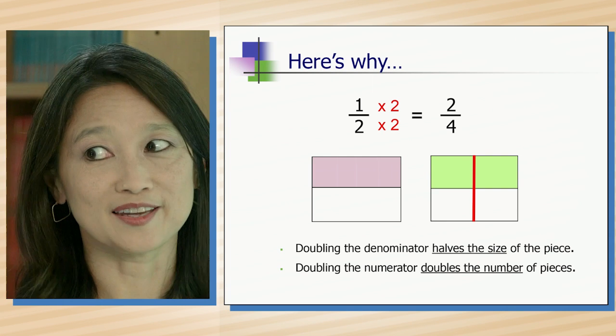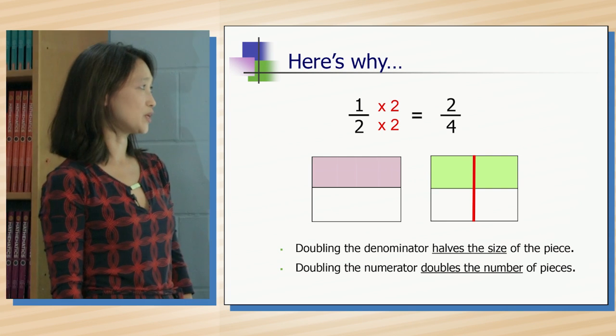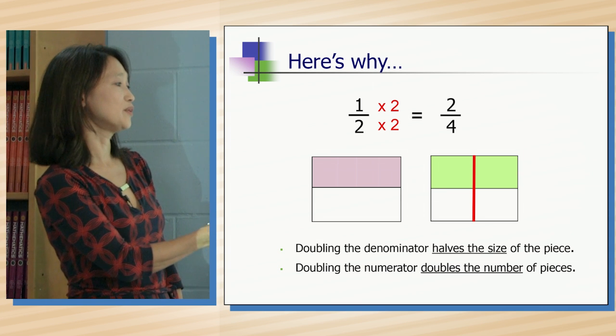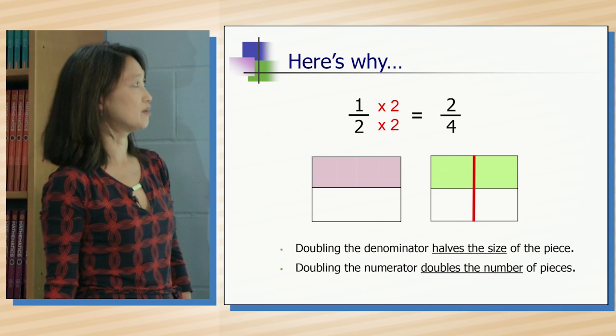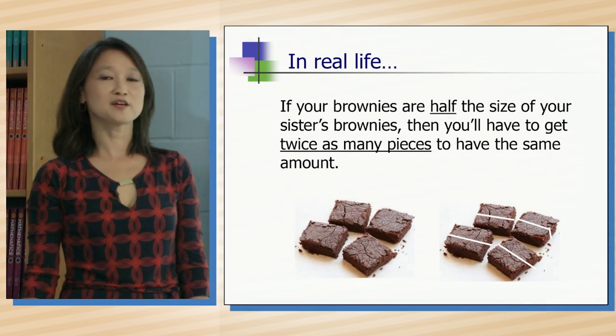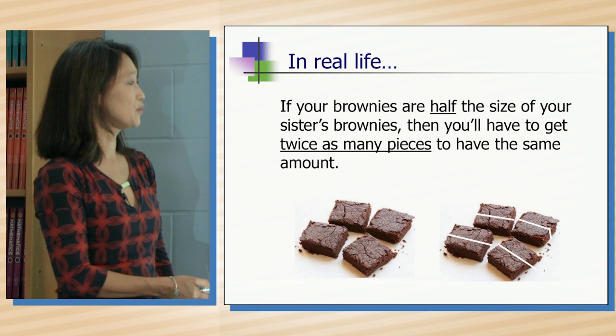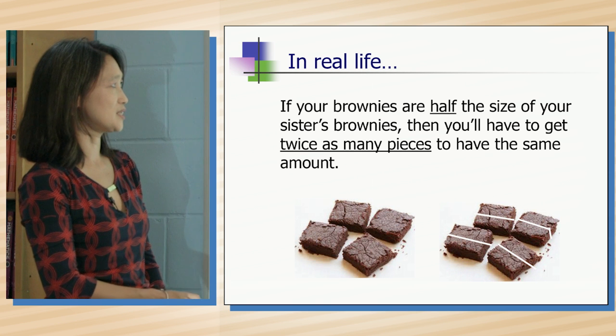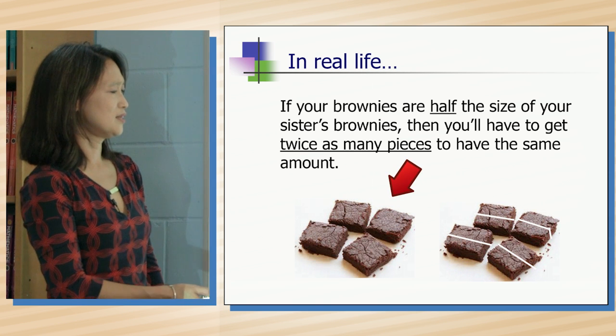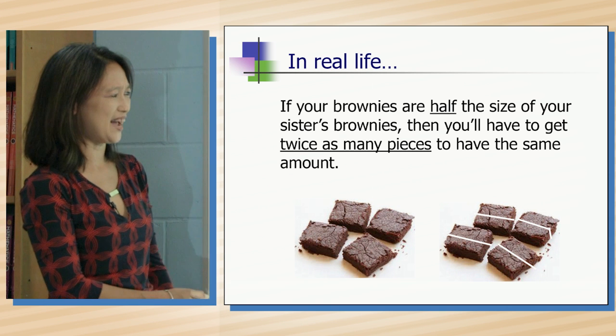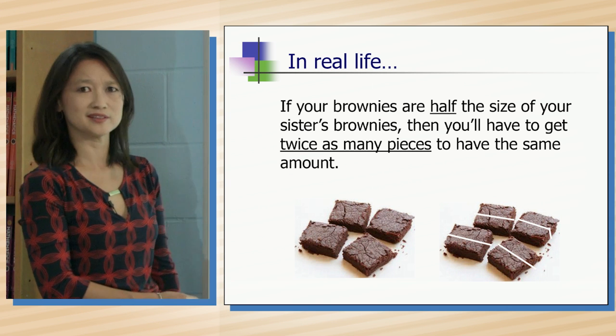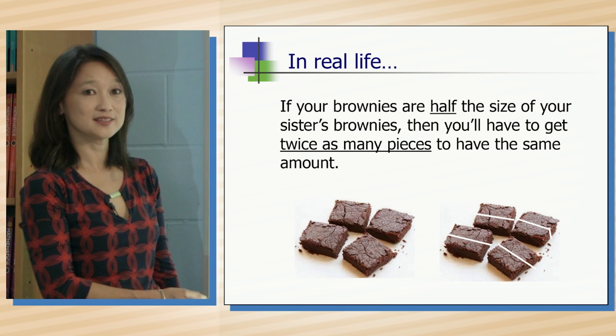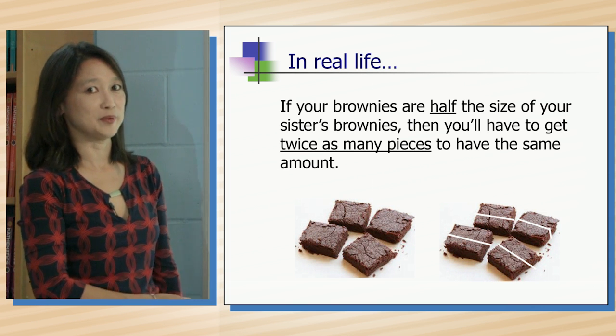The reason it stays the same size is because doubling the denominator halves the size of the piece and doubling the numerator doubles the number of pieces. Let's think about this in real life. If your brownies are half the size of your sister's brownies, is that fair? No. You're going to want to get twice as many pieces as your sister, and then you'll have the same amount of brownie.